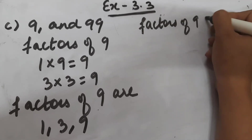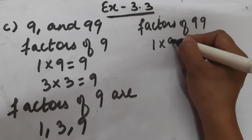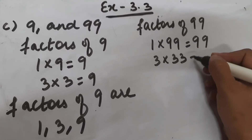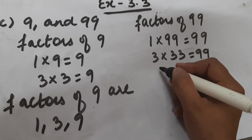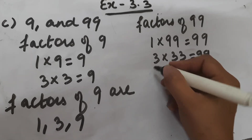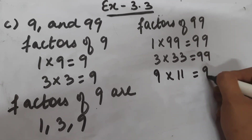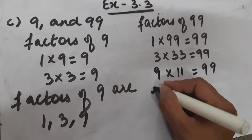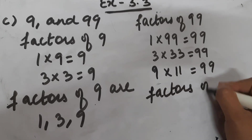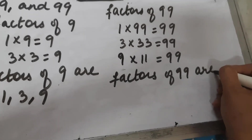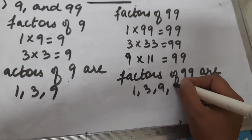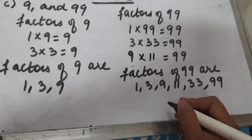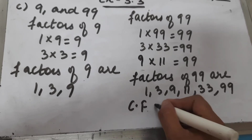Now the factors of 99: 1 × 99 = 99, 3 × 33 = 99, 9 × 11 = 99, 11 × 9 = 99. Repetition has started so we stop here. The factors of 99 are 1, 3, 9, 11, 33, and 99.